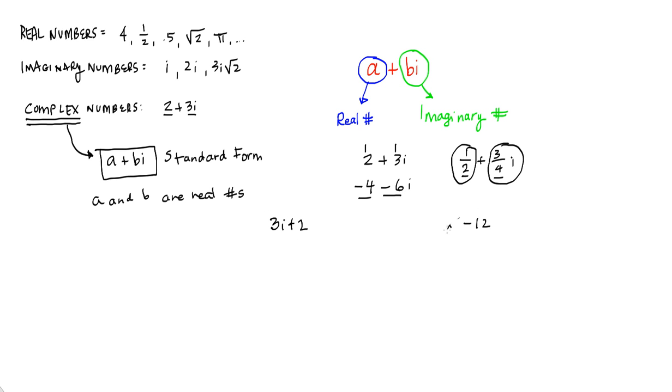And that is to write the real number first. So we're going to always write our real number first in standard form. We're going to write it in a plus bi form.